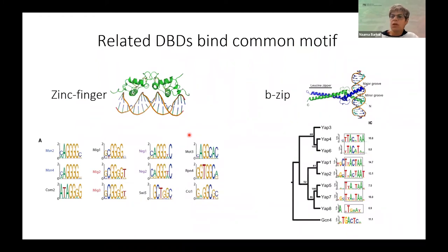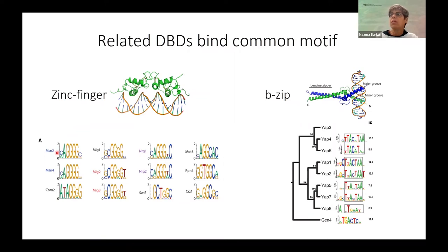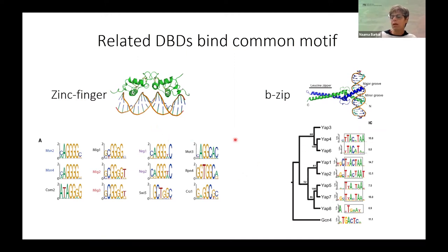We decided to focus on two families of transcription factors in budding yeast. The first is the MSN2 family — MSN2 is the founding transcription factor — which are C2H2 zinc finger type transcription factors. They are related and all bind similar sequence motifs. The second is the bZIP family, which again has multiple factors binding a similar motif. These factors are known to act in similar but distinct cellular functions, so we thought there could be some interesting biology here.